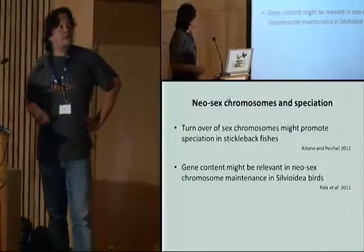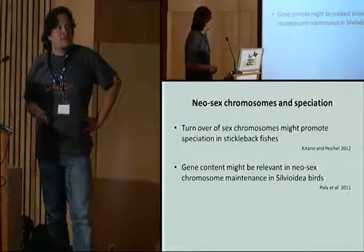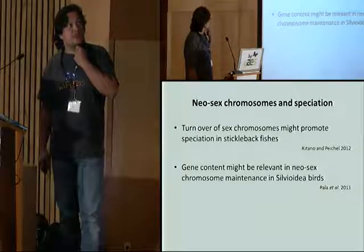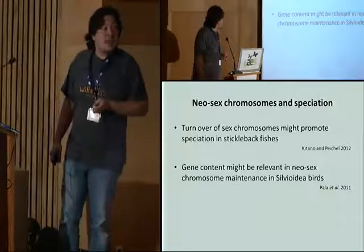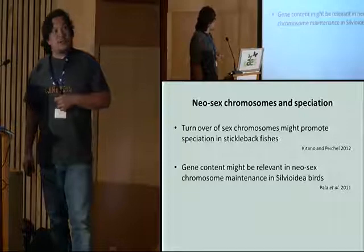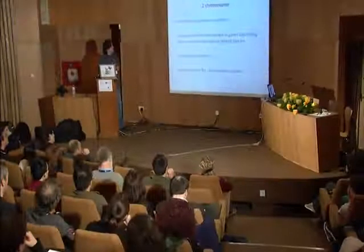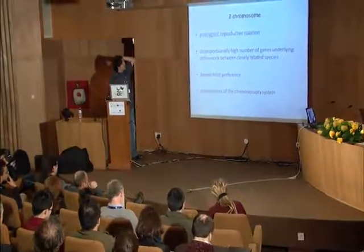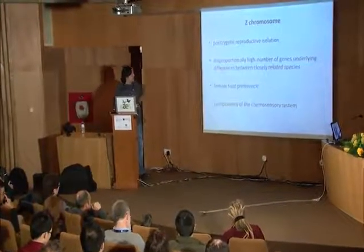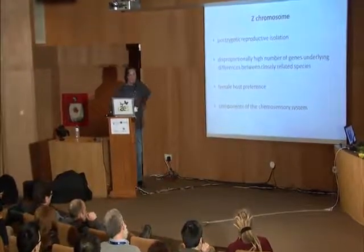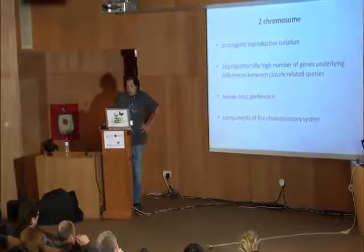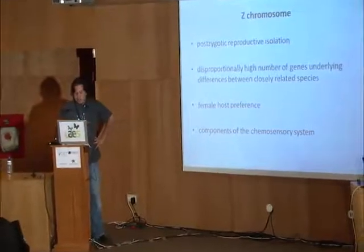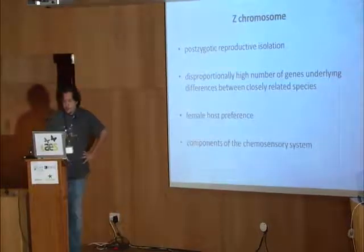I found very inspiring some papers on ecological speciation and neosex chromosomes. For example, in stickleback fishes it was shown that turnover — meaning rearrangements of sex chromosomes — might promote speciation. In birds it was suggested that gene content might be relevant in neosex chromosome maintenance. Looking at the gene content of these two chromosomes: the Z chromosome is known for its role in postzygotic reproductive isolation, harboring a disproportionately high number of genes underlying differences between closely related species in Lepidoptera. Female host preference was shown to be Z-linked in some species, and components of the chemosensory system are Z-linked in Ostrinia nubilalis, which is a model for chemoreception in Lepidoptera.